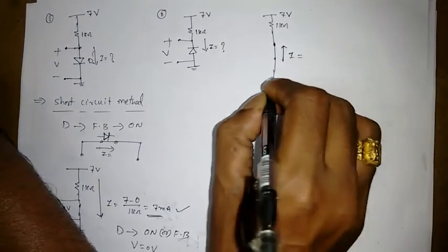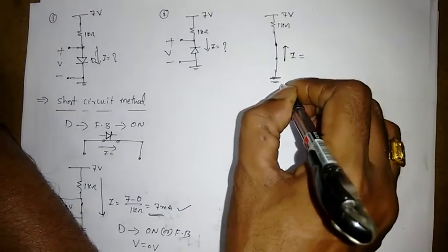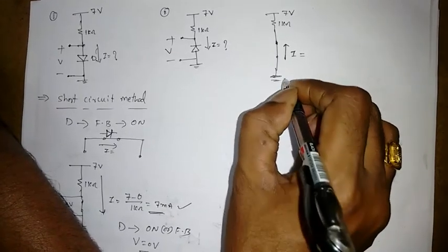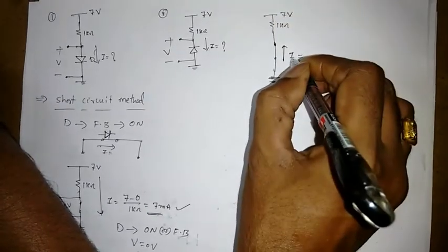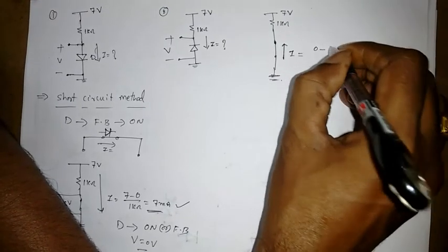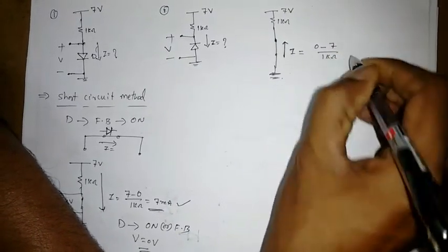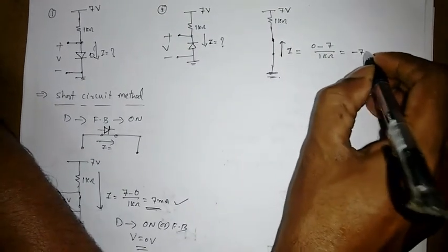So from what is this? From lower potential. That is from ground to top. The current direction is there. So I can find 0 minus 7 by 1 kilo ohm. So it is minus 7 milliampere.